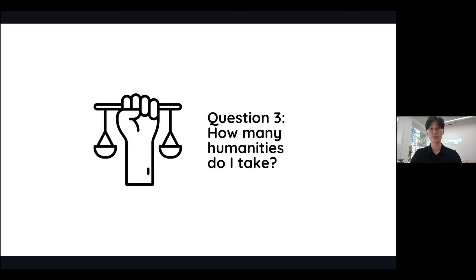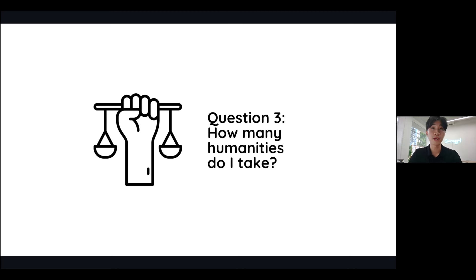Now the third key question to ask yourself is how many humanities subjects should you take? Generally speaking, most students will be offered social studies and another elective humanities subject — one of geography, history, or English literature. Some schools however do offer pure humanities as well, such as pure history, pure literature, or pure geography. The question to ask yourself is which of these three humanities you should focus on.